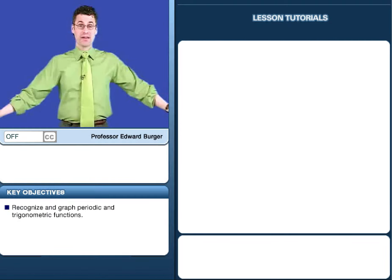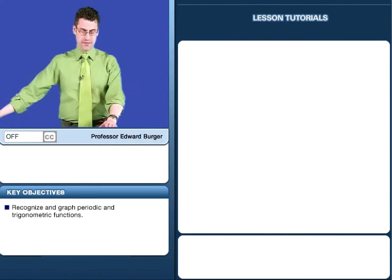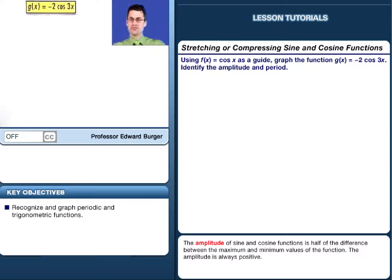Hey, let's have some fun by graphing a sort of fun exotic function: g of x equals negative 2 times cosine 3x.